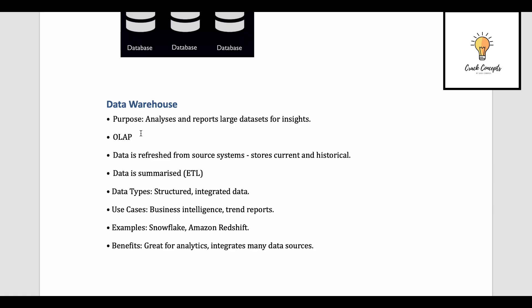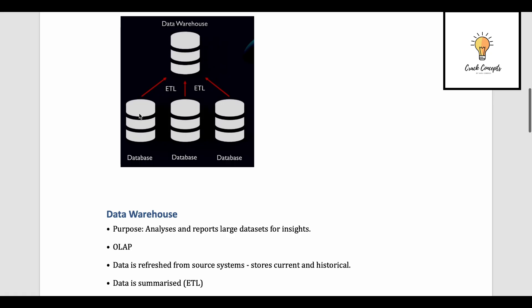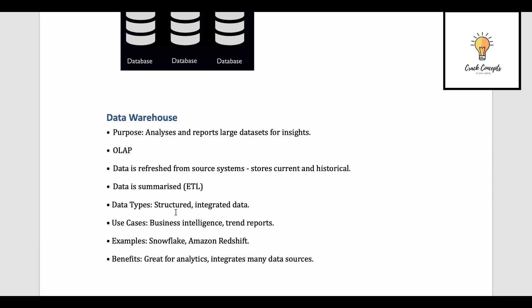A data warehouse is the foundation of OLAP — Online Analytical Processing. Data is refreshed from source systems, so it will not have live data — it depends on the refresh frequency. It stores current and historical data, which is why it can be used for analytical purposes. Data is summarized using ETL and stored in a form that helps with analysis. The data type is structured, integrated data.